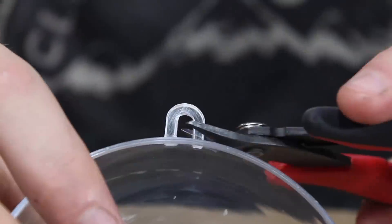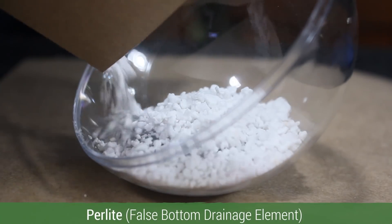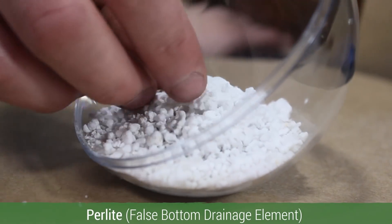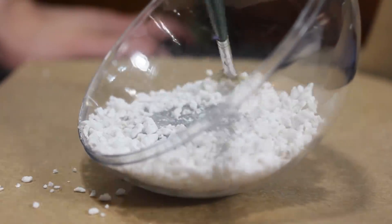Next I snipped off the hanging part of the ornament. After allowing the glue to dry and cool down, I added a layer of perlite into the container. This will be the drainage element in our false bottom. The reason that I used perlite was to keep the terrarium as light as possible.